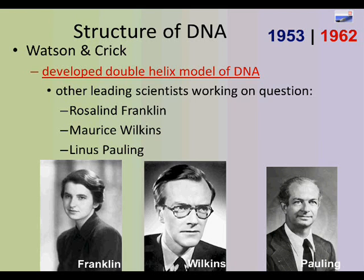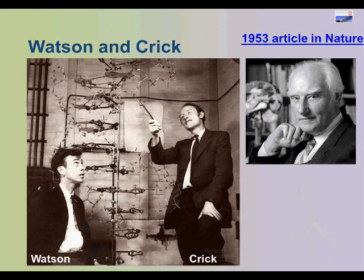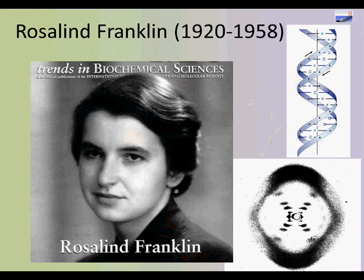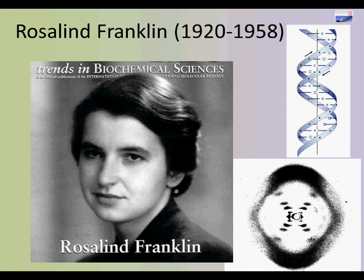Watson and Crick published an article in Nature in 1953 — roughly a page to a page and a half — that established there is a sugar-phosphate backbone to DNA, and using Chargaff's rules, there are certain base pairings that build something that looks like a double helix. The idea really came from Rosalind Franklin, who was the leading researcher in X-ray crystallography. She took X-ray pictures of DNA molecules, and if you can imagine looking down a spiral staircase, this is exactly what you would see.